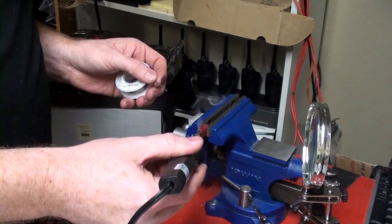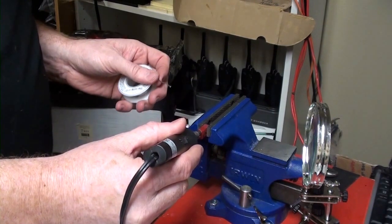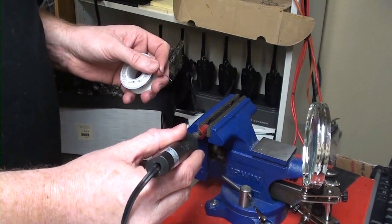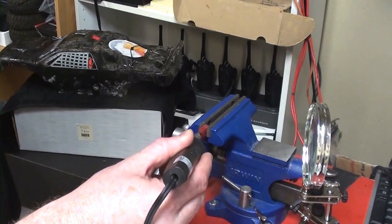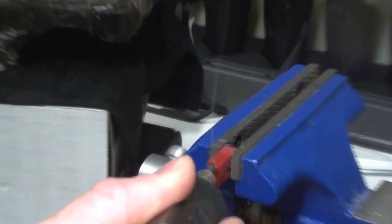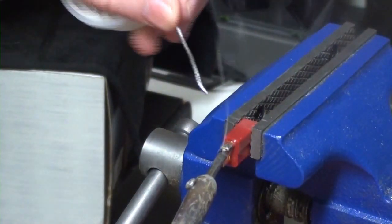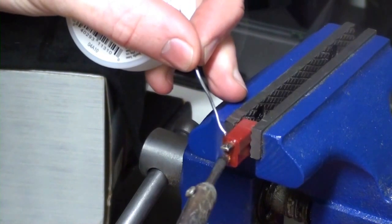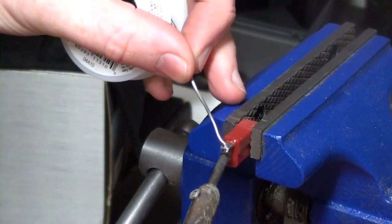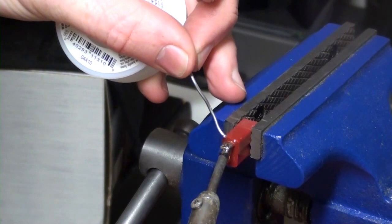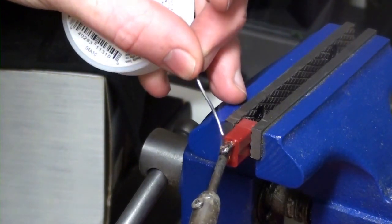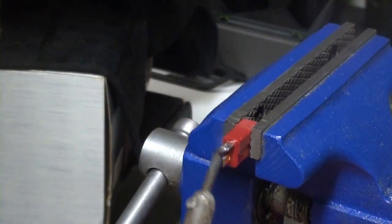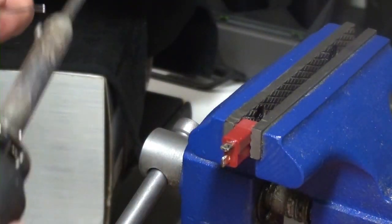So now I'm going to take and heat up the Dean's connector. So I'm basically tinning each side. Try to zoom in just a little bit. So now that I've got that good and heated, put a little bit of solder on there. Make it good and heated. So now it's there. It's flowing smoothly all around the tip. So that is done.